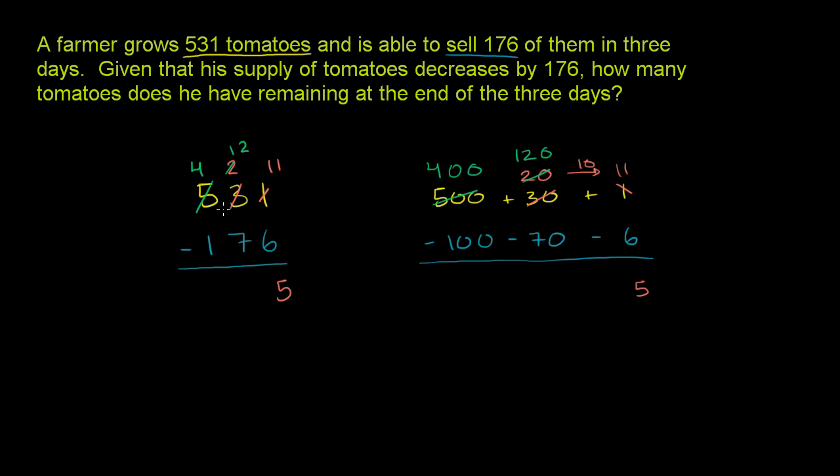Once again, the more mechanical or rote way of thinking about it is that you took 1 away from the 4 and you stick that 1 onto the front of the 2. But you're really taking 100 from the 500 to make it 400, and then adding that 100 to the 20 here and making it 120. But you write it here as a 12 because it's 12 tens. You're in the tens place.